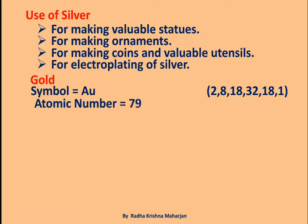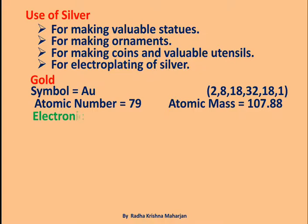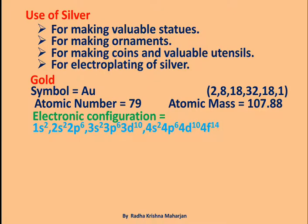Gold: Atomic Number 79, Atomic Mass 197.0. Electronic Configuration: 1s2 2s2 2p6 3s2 3p6 3d10 4s2 4p6 4d10 4f14 5s2 5p6 5d10 6s1.